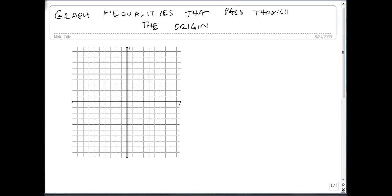We're now going to graph inequalities that pass through the origin. So we're talking about any graph that passes through this point right here. We'll start with an easy example.